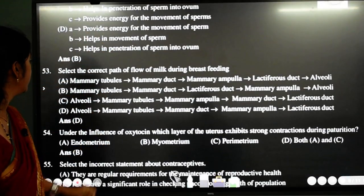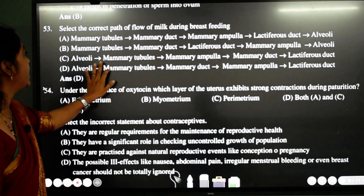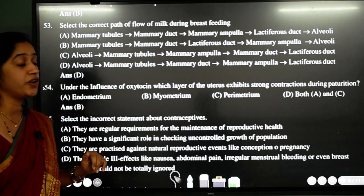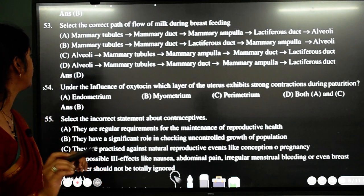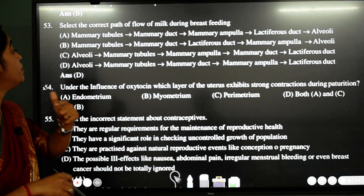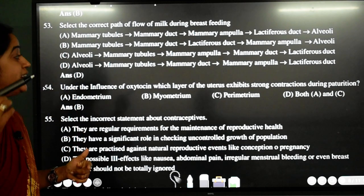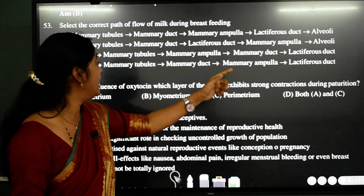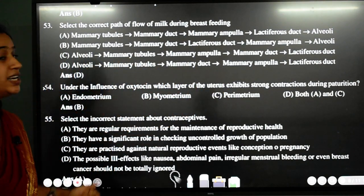53rd question. Select the correct path of flow of milk during breastfeeding. So here we have to check for the flow of milk. See student. First, it will start from alveoli. Then it goes to the mammary tubules. Then it will go to the duct. Then it will go to ampulla. And finally, it will go to the lactiferous duct. So the answer here is D.